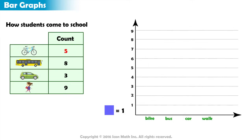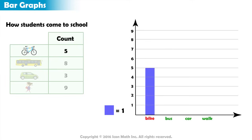We have five students who take their bikes to school. So on top of the bike category, we color the first square, and another right above it, and another, and so on until we've colored five squares. Notice how all colored squares combined make a long bar.